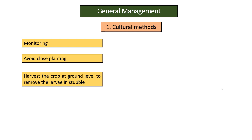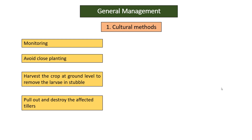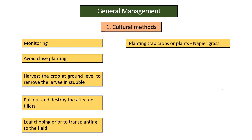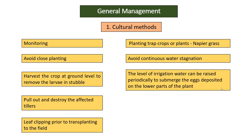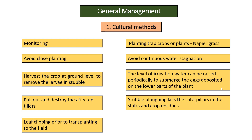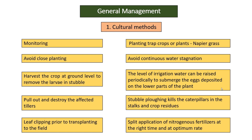General management: Stem borers can be culturally controlled by monitoring, avoiding close planting spaces, harvesting the crop at ground level to remove larvae in stubble, pulling out and destroying affected tillers, tip clipping prior to transplanting to the field, planting trap crops such as napier grass, and avoiding continuous water stagnation. The level of irrigation water can be raised periodically to submerge eggs deposited on the lower parts of the plant. Double plowing kills caterpillars in the stalks and crop residues. Split application of nitrogenous fertilizers at the right time and at optimum rate is also recommended.